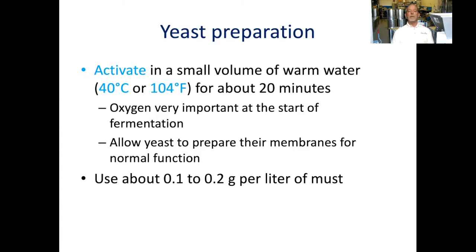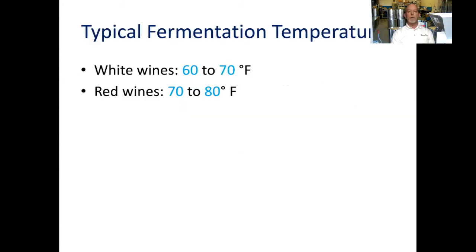Oxygen has negative effects on wine later on, so it's important not to oxygenate your wine. In particular, it causes browning due to oxidation by the enzyme polyphenol oxidase. The amount of yeast needed is relatively small — about 0.1 to 0.2 grams of yeast per liter of must. The typical fermentation temperature for white wines is between 60 and 70 degrees Fahrenheit, and somewhat higher for red wines, from 70 to 80 degrees, to improve extraction of colors and tannins from the skins.